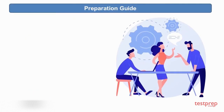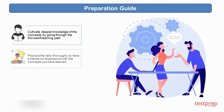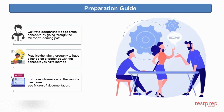Now let us discuss the preparation guide. Here is a compiled list of tips you can follow as part of the Azure AI-102 certification training strategy. 1. Cultivate deeper knowledge of the concepts by going through the Microsoft learning path. 2. Practice the labs thoroughly to have a hands-on experience with the concepts you have learned. For more information on the various use cases, see Microsoft documentation.